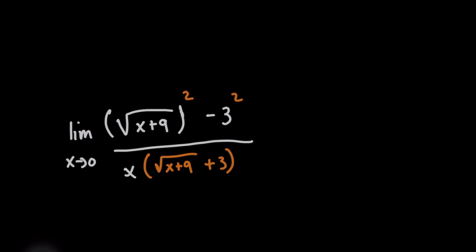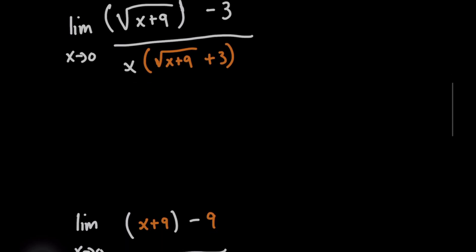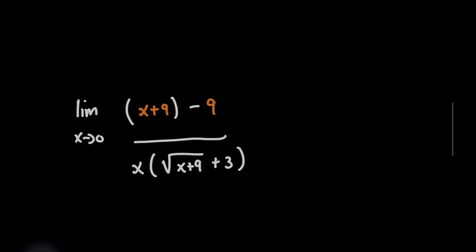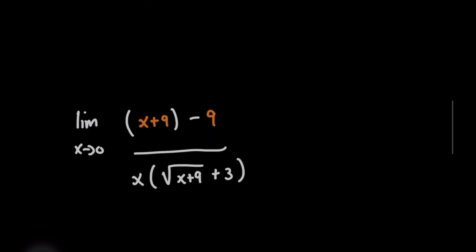So what's cool about this is, as you can see now, we are undoing the square root on the numerator, and so the top is going to simplify to x plus nine minus nine. And that's really simple, right? That's just going to give you x.